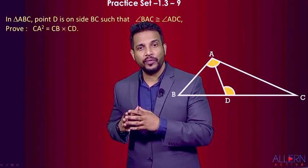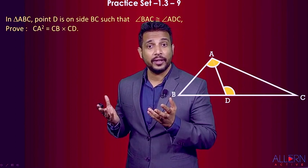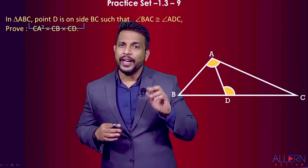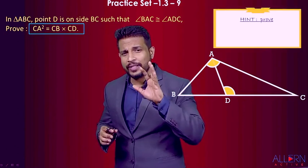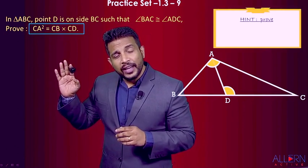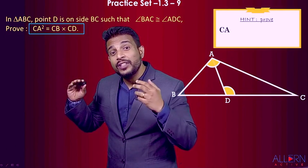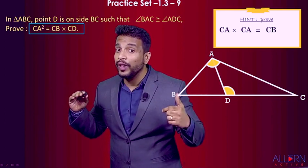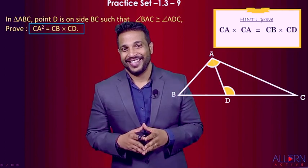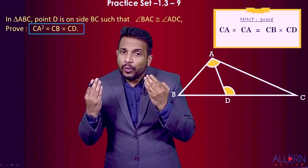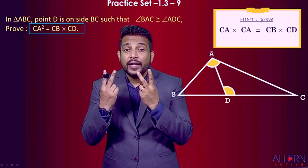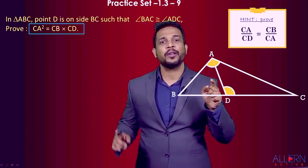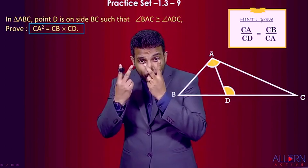When we see this proof — CA² = CB × CD — we need to understand how to analyze it. On the left-hand side, CA² means CA × CA, which is a product, and the right-hand side is also a product. Whenever we want a product equal to a product, we think in terms of ratios: cross-multiplying two equal ratios gives us equal products.